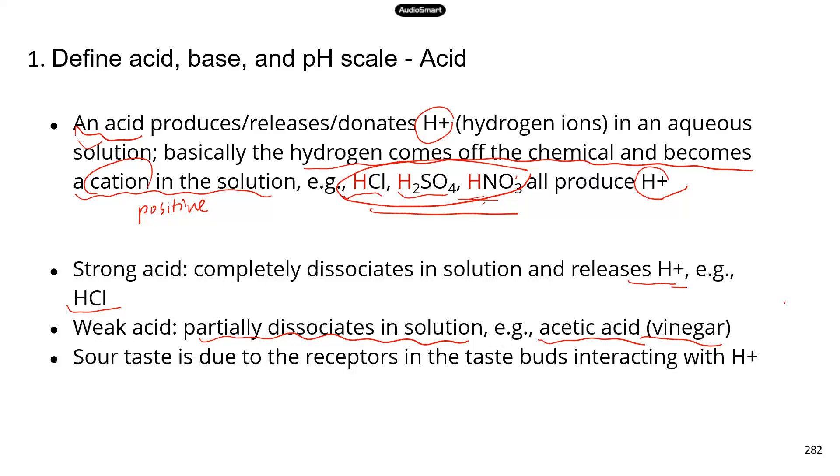We often associate acids with something sour. And the sour taste is due to the receptors in your taste buds. If you have taken anatomy and physiology class, when we talk about taste buds, those receptors will respond to hydrogen ion. And a signal gets generated. Once that signal reaches your brain, your brain interprets that as a sour taste. So that's why acids or something acidic will give you that sour taste.